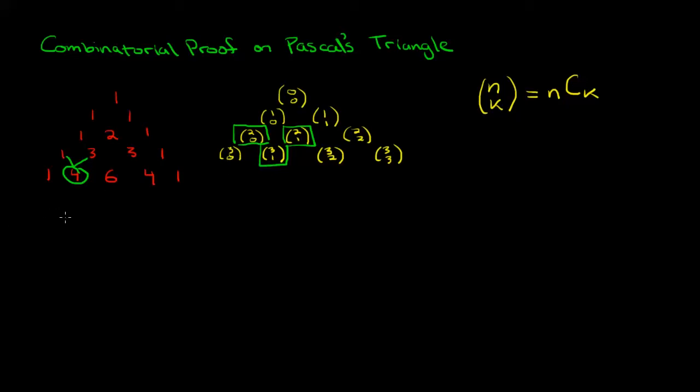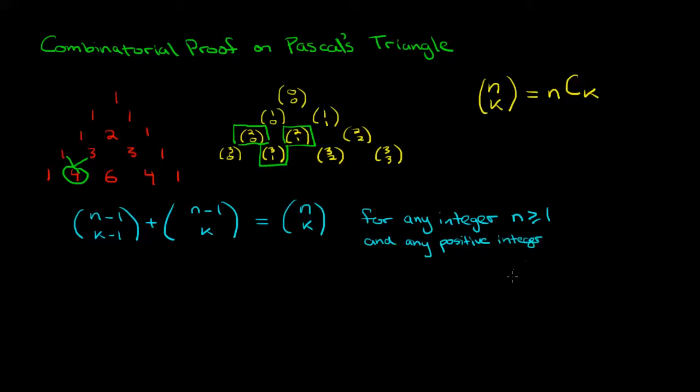What we will prove is that n minus one choose k minus one plus n minus one choose k is equal to n choose k for any integer n bigger than or equal to one and any positive integer k less than or equal to n minus one. So we can think about this as being somewhere deep inside the triangle and we're filled in a row n minus one. So somewhere along this row, we had the term n minus one choose k minus one. And the next term was n minus one choose k. And now when we're building the term below it, directly below it, we know that it's equal to the sum of those two. So that's what we're going to prove.